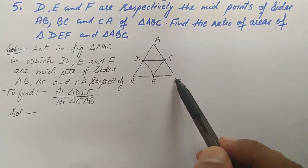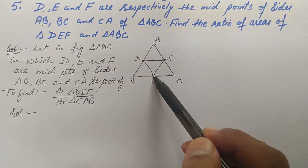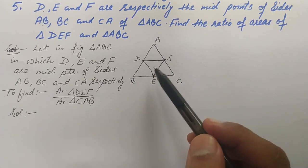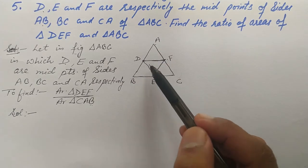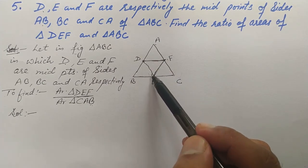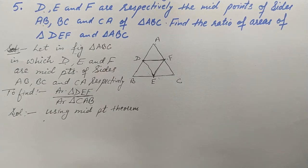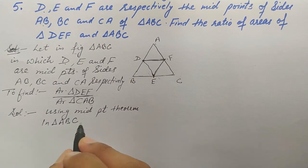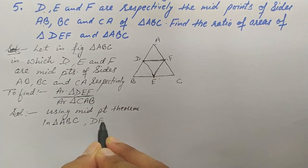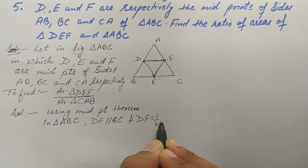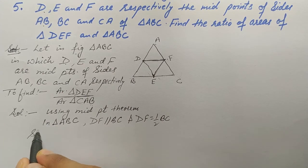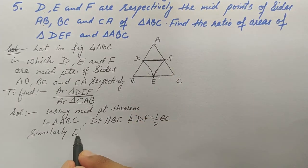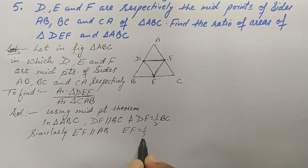Similarly, E and F are midpoints of BC and CA, so EF is parallel to AB and EF equals half of AB — also by the Midpoint Theorem. Likewise, D and E are midpoints of AB and BC, so DE is parallel to AC and DE equals half of AC.